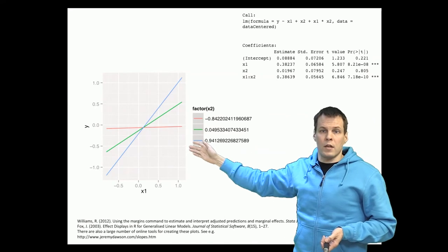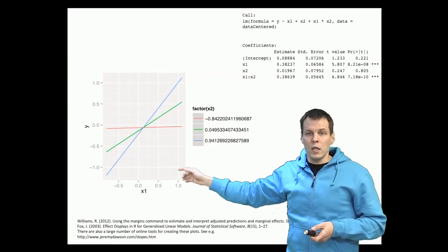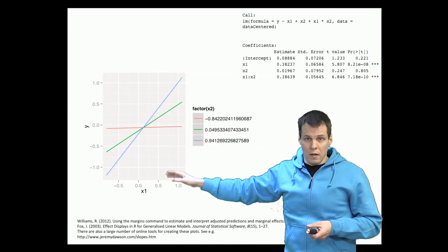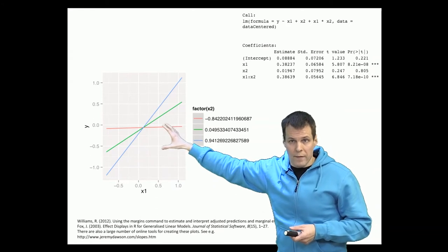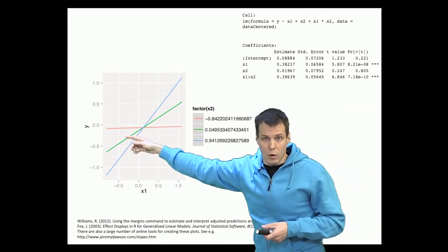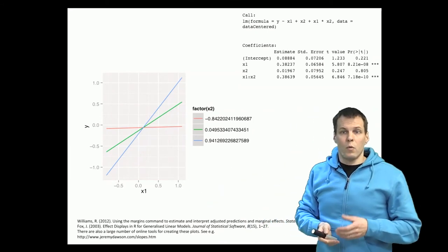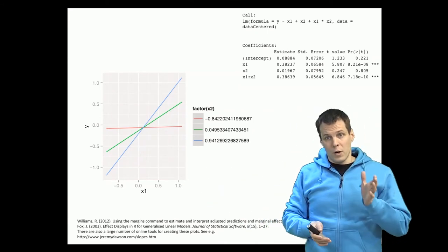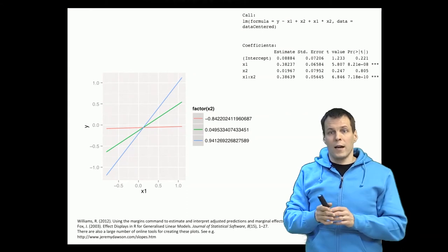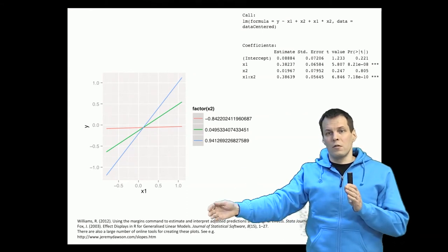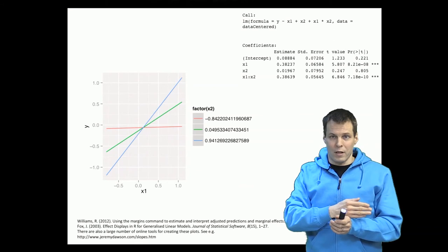The problem with centering is that once we center our variables then the interaction plot, the values of the predictive values of Y will be incorrect by the amount that we center the data. So we can no longer do predictions usefully. We have to convert the predictions back to the non-centered metric for them to make sense.